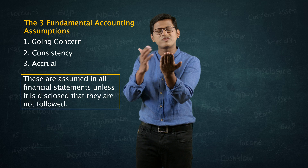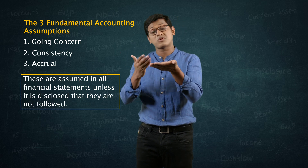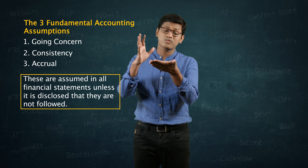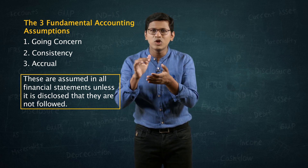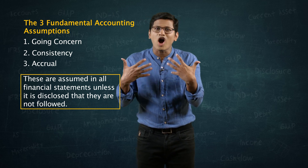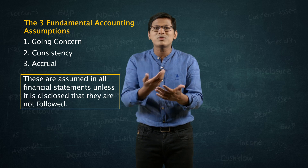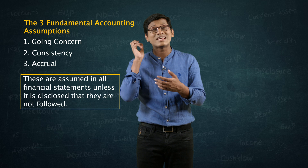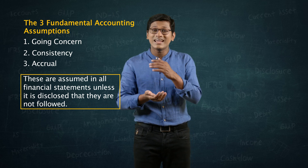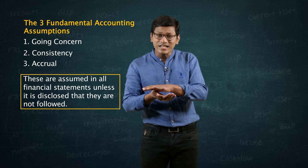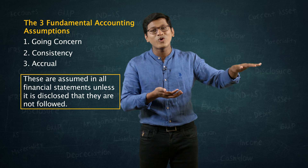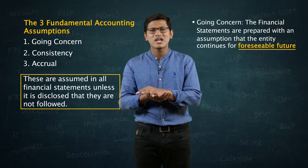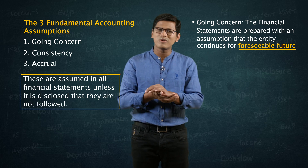Say we are looking at the financial statements of Infosys — almost 5,000 crores profit, almost 30,000 crores turnover. By looking at this, we don't automatically assume that this company will close down in the next six months. Financial statements are prepared with an assumption that the entity continues into the foreseeable future.